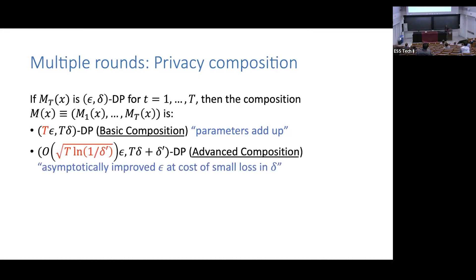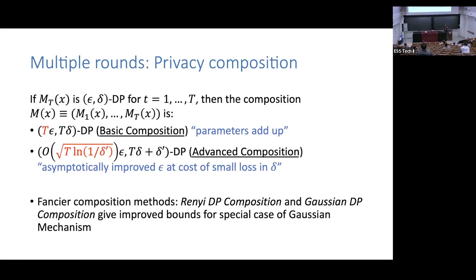There's a thing called advanced composition that gives dramatically improved dependence on T — T is now in a square root — but with a small loss in delta. There are also fancier approaches — Rényi DP and Gaussian DP — tailored for the special case of adding Gaussian noise, which is what's commonly used in practice. Empirically comparing all three: on a plot with delta on the x-axis and epsilon on the y-axis, Gaussian DP performs the best, giving a dramatically smaller epsilon. The scale looks like zero but obviously isn't; it's very close, and you like that.